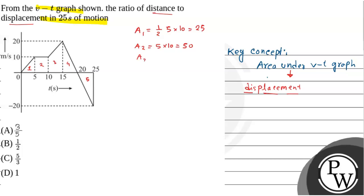Now area 3, this is a triangle. So half into 5 into sum of the parallel sides, that is 10 plus 20, so 30. This equals 75.